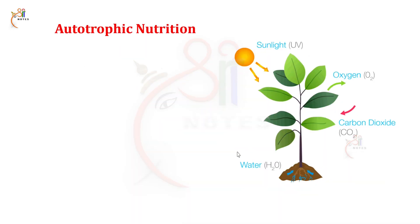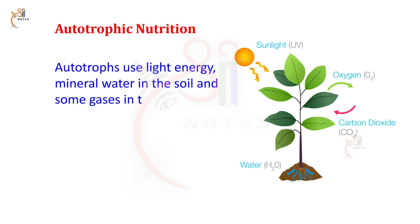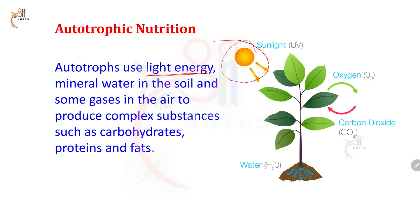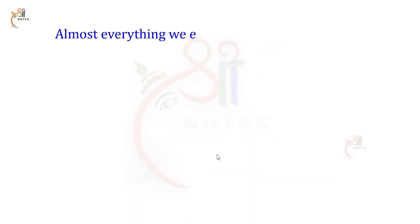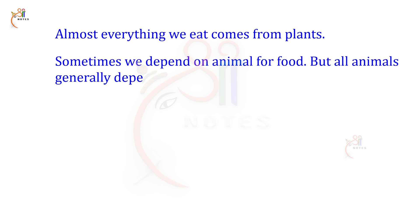Now, what actually happens in autotrophic nutrition? How do autotrophs prepare their own food? Autotrophs use light energy from the sun, mineral water from the soil, and gases from the air to produce complex substances such as carbohydrates, proteins, and fats. Almost everything we eat comes from plants. Sometimes we depend on animals for food, but all animals generally depend on plants for their food. So every organism depends on plants directly or indirectly.